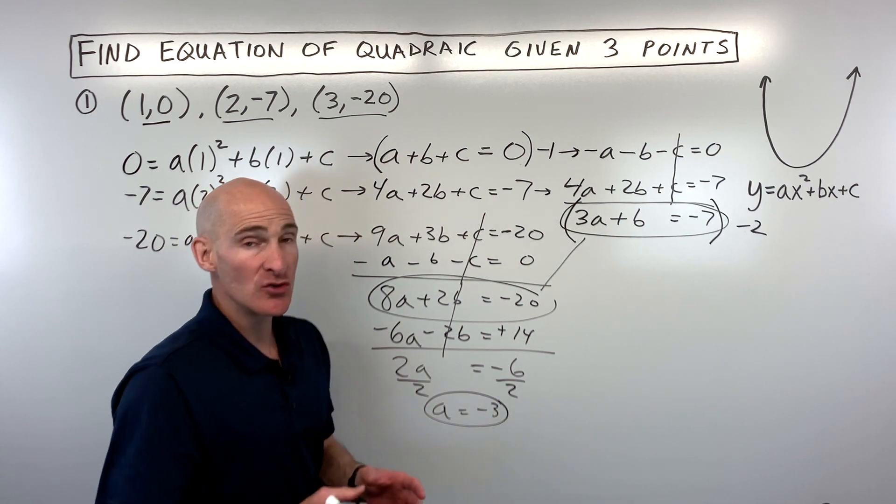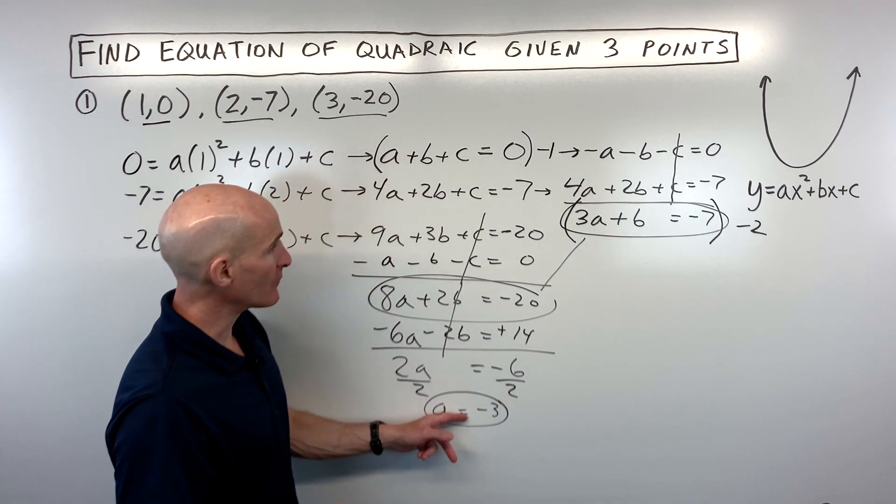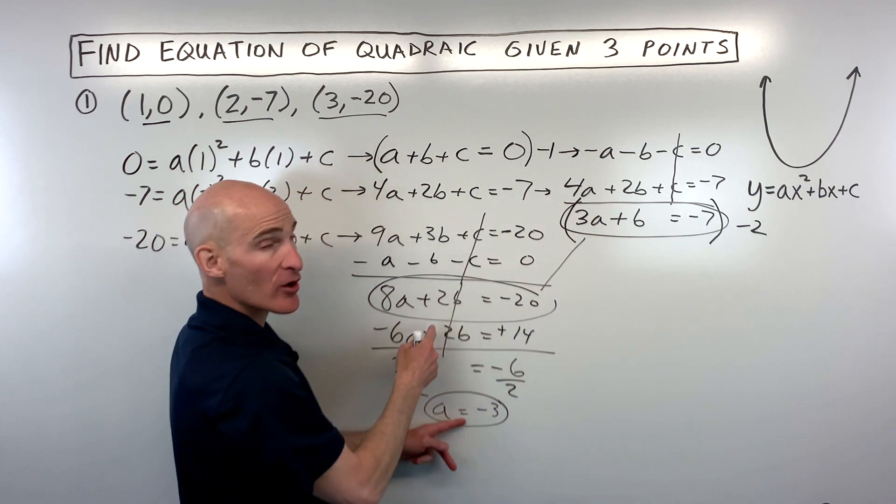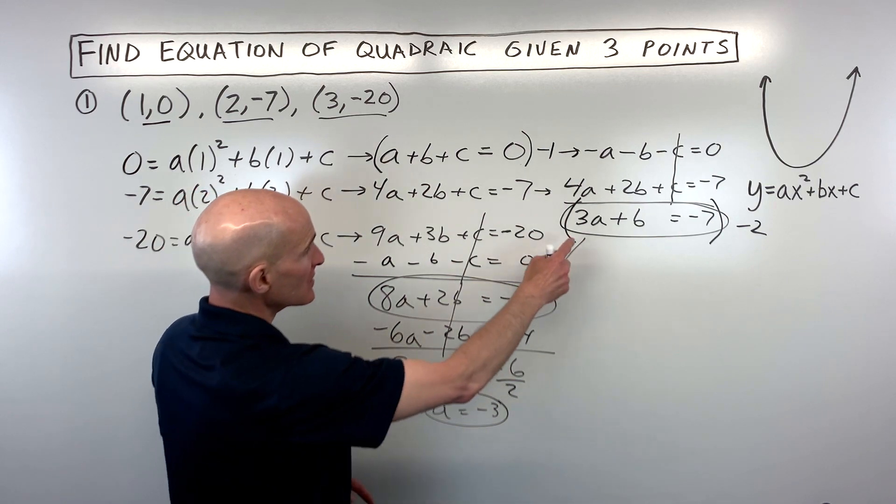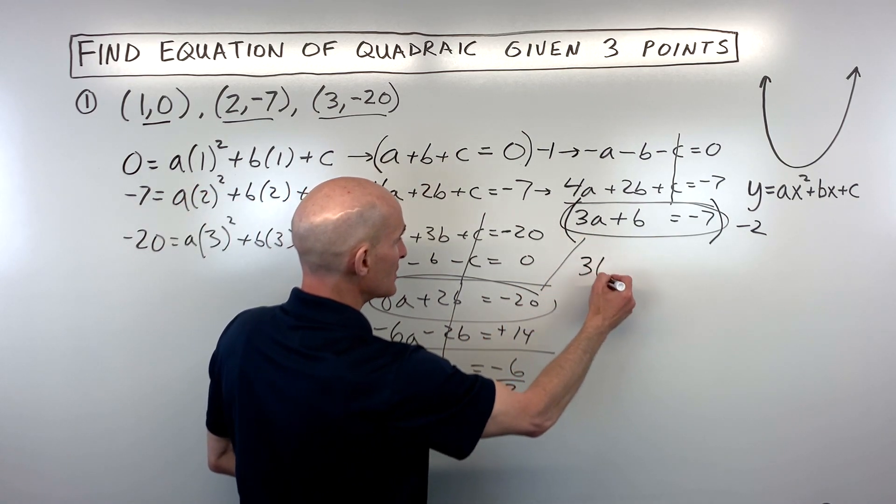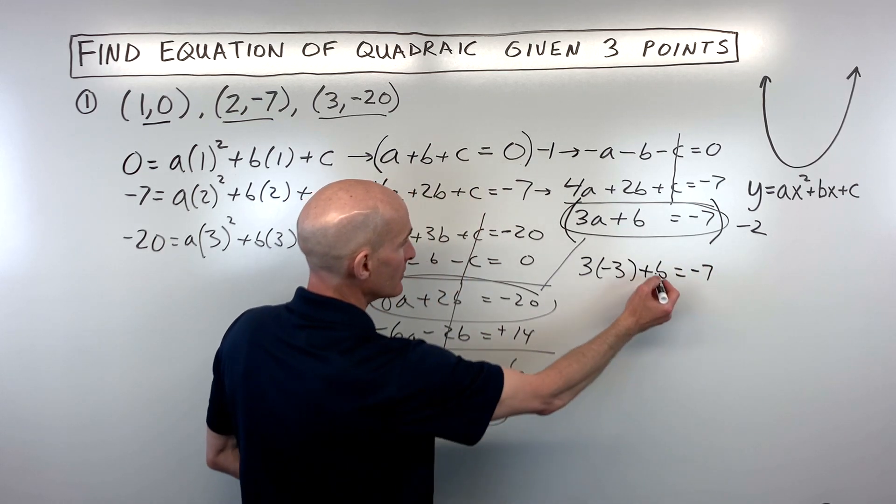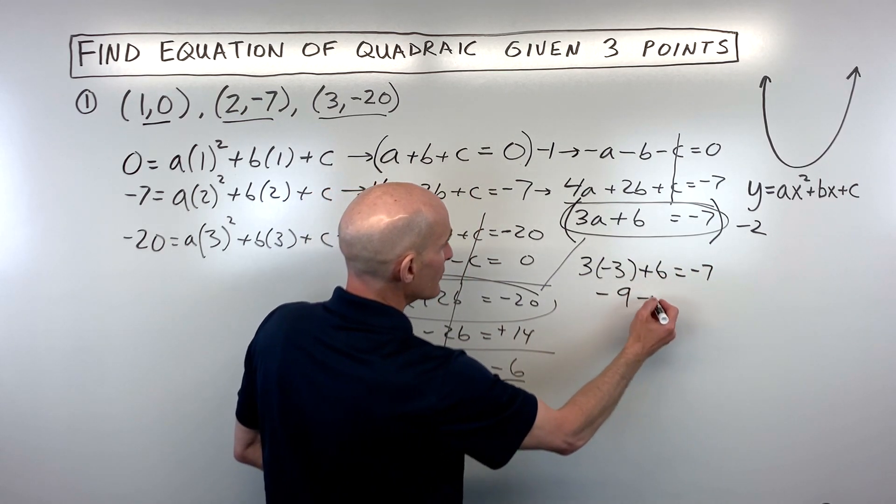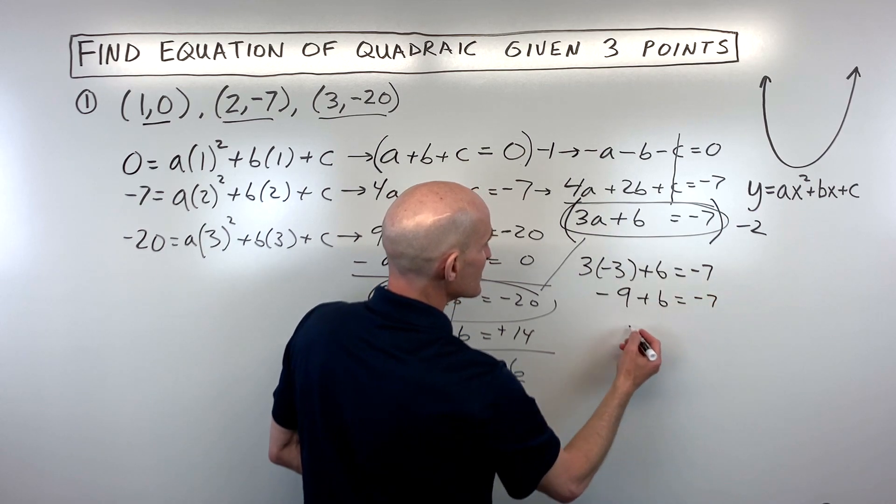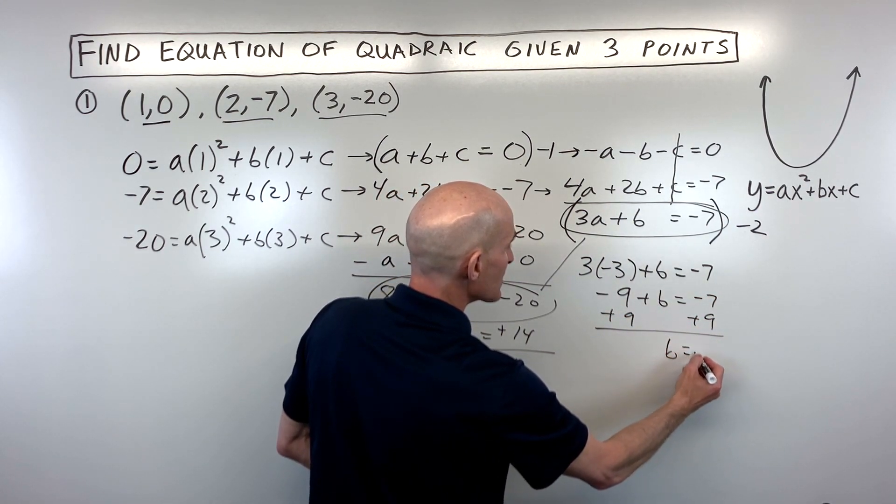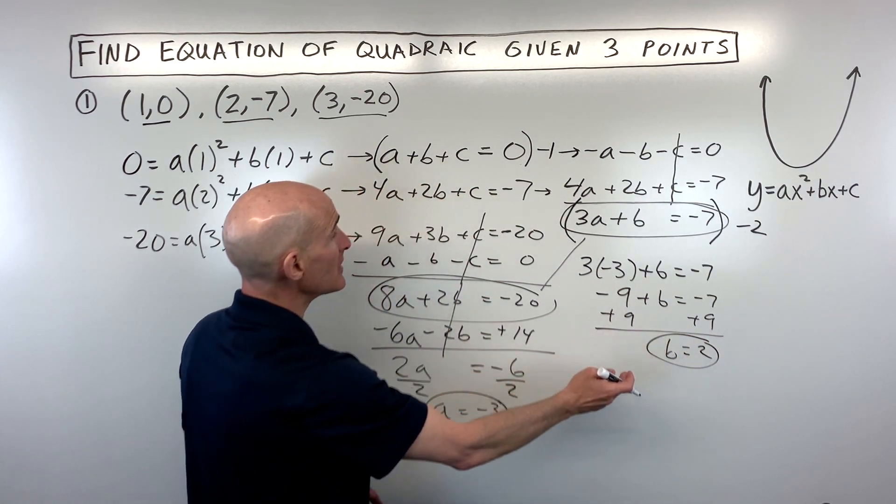And then what we want to do now is we want to work our way backwards. So if a is negative 3, we can put it into one of the equations that has just two variables. So let's just put it into this one over here. So that's going to be 3 times negative 3 plus b equals negative 7. So that comes out to negative 9 plus b equals negative 7. Add 9 to both sides. And you can see that b is coming out to positive 2.